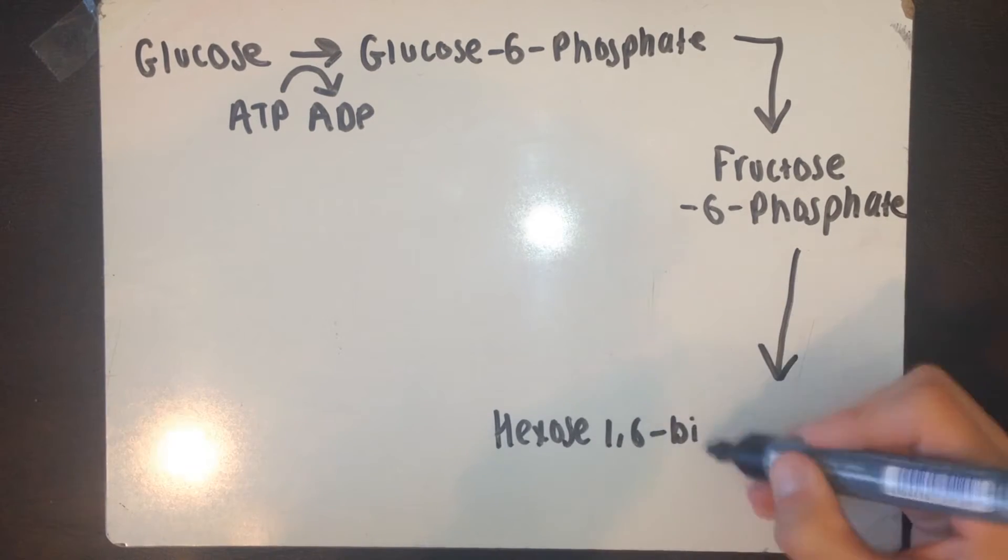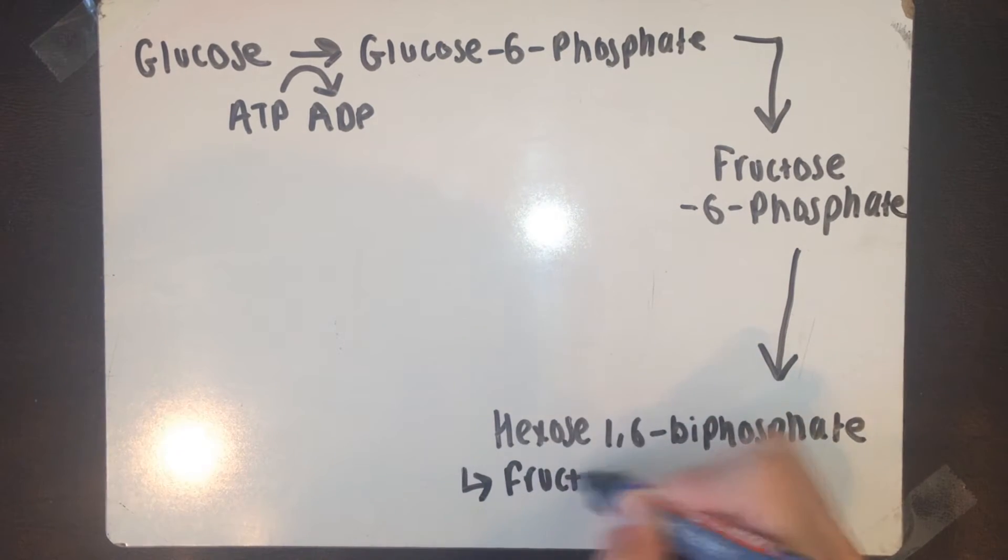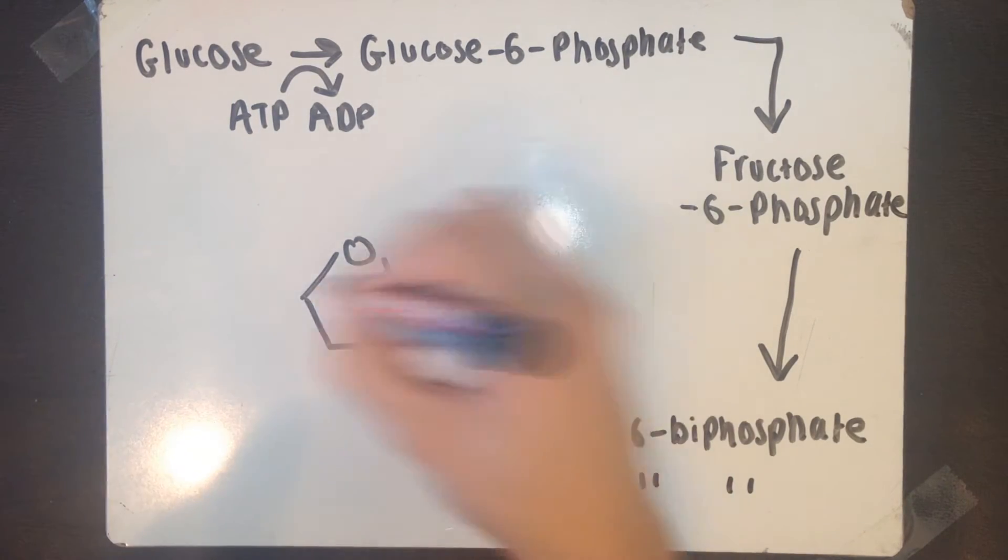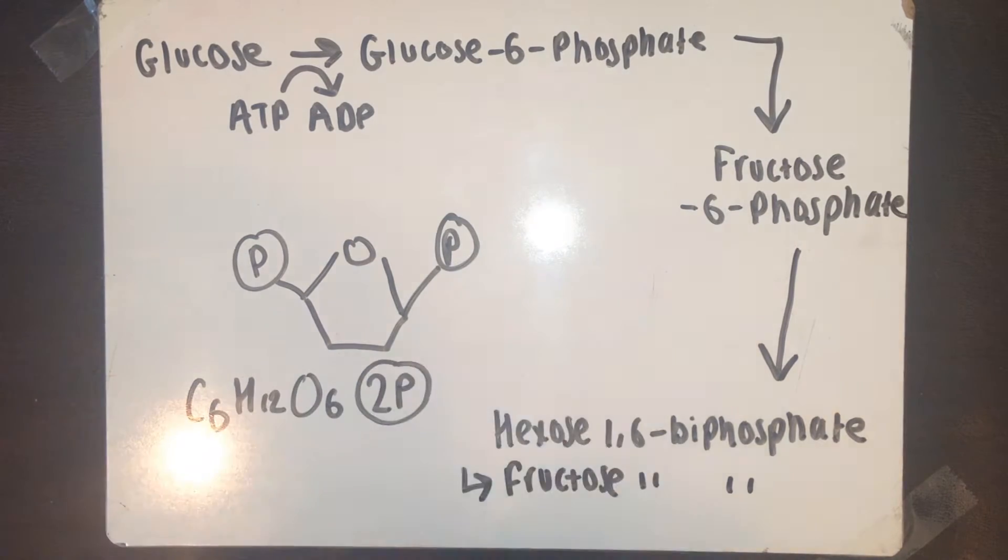So now another hydrolysis reaction of ATP occurs and once again you go from ATP to ADP. This gives another phosphate group. This phosphate group now attaches to another part of the carbon ring.